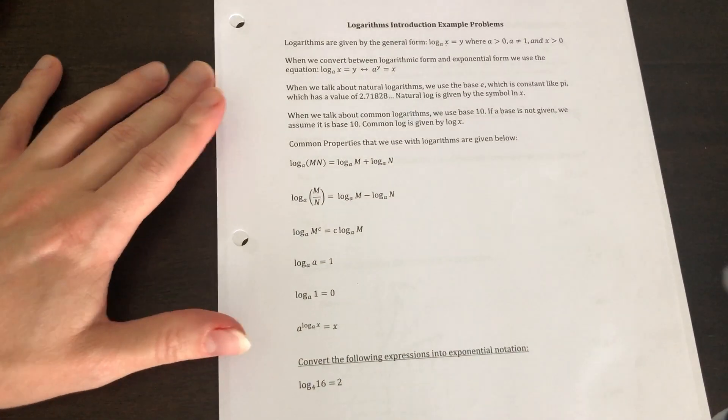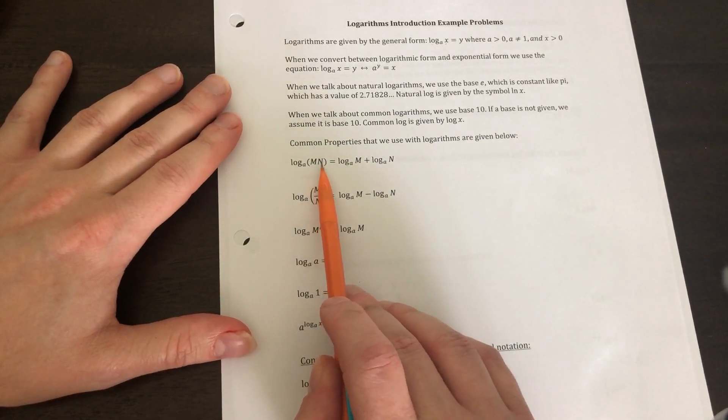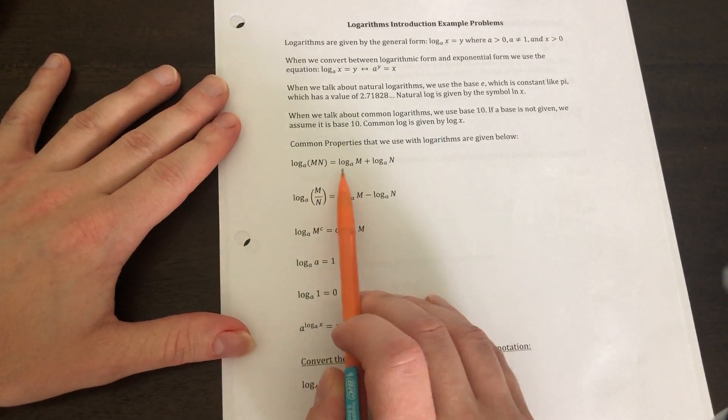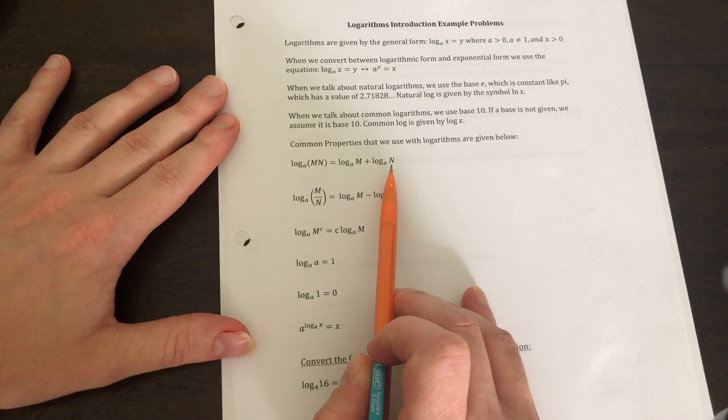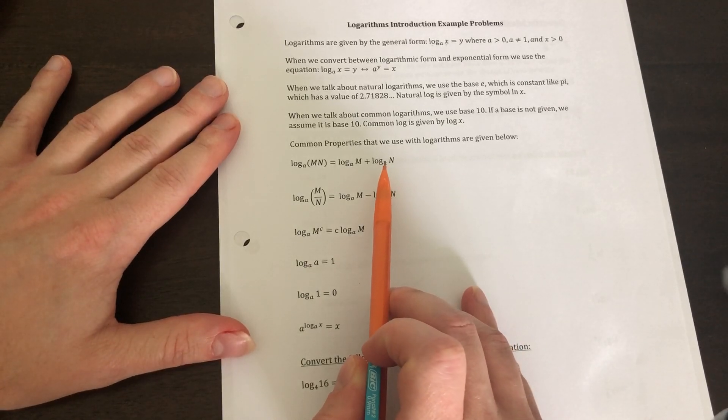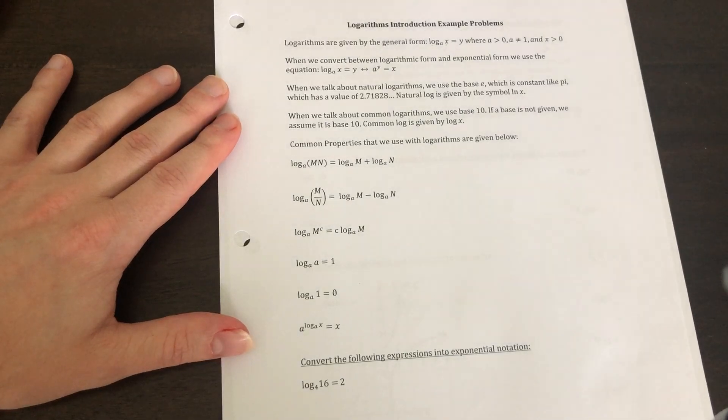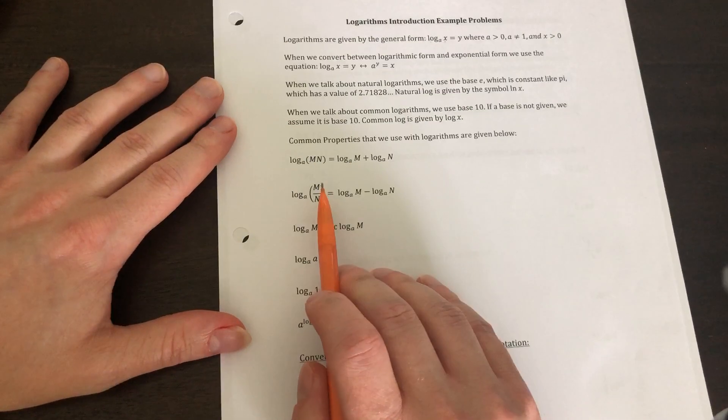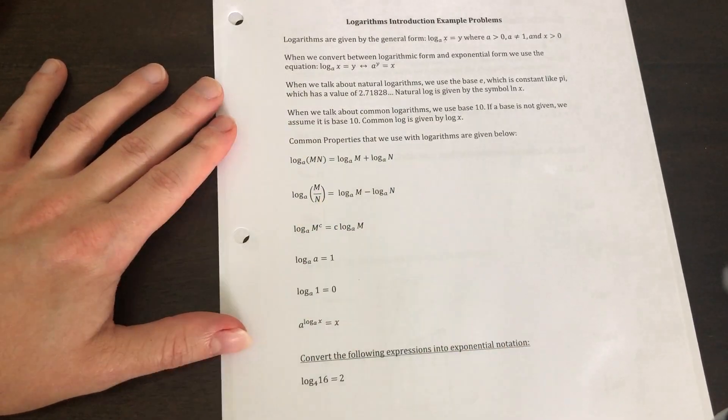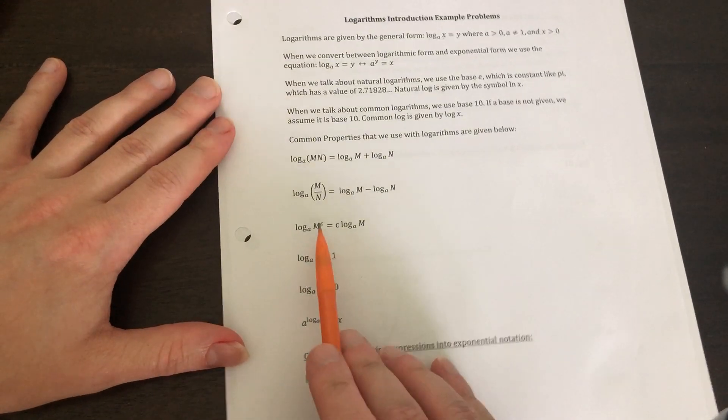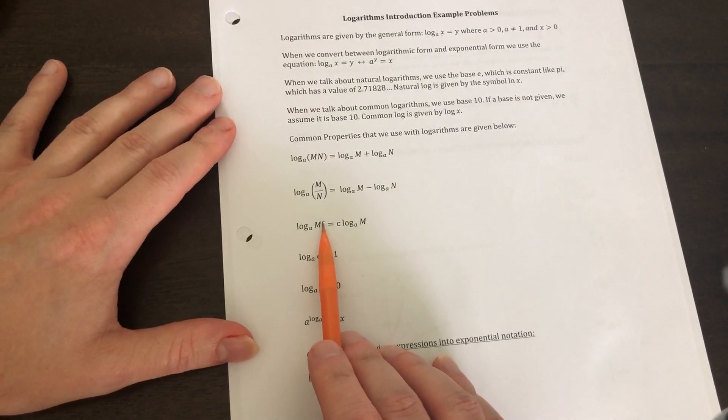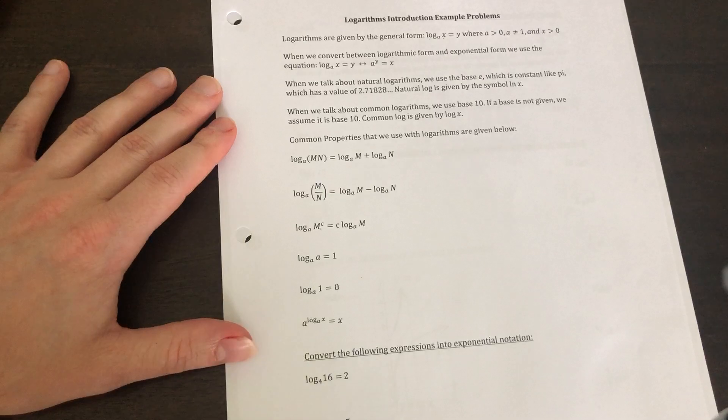Some general properties of logs: When you have multiplication, you can split them apart by addition. Same thing when you're multiplying exponents, you add the exponents. Logs are just fancy ways of expressing exponents. When you have division, you write it as subtraction. Anytime your argument is raised to a power, we're going to take that c and put it in front.